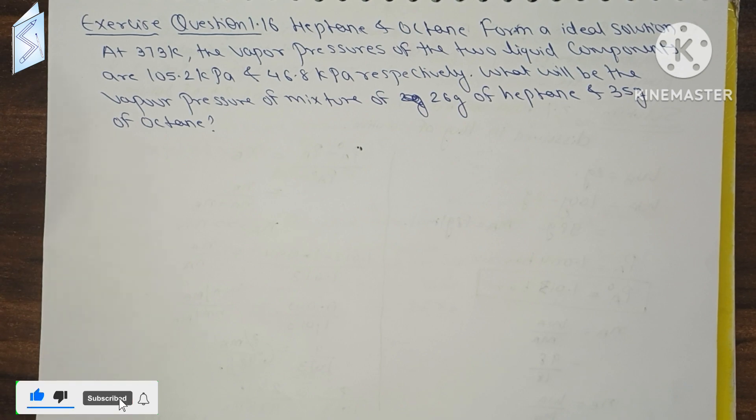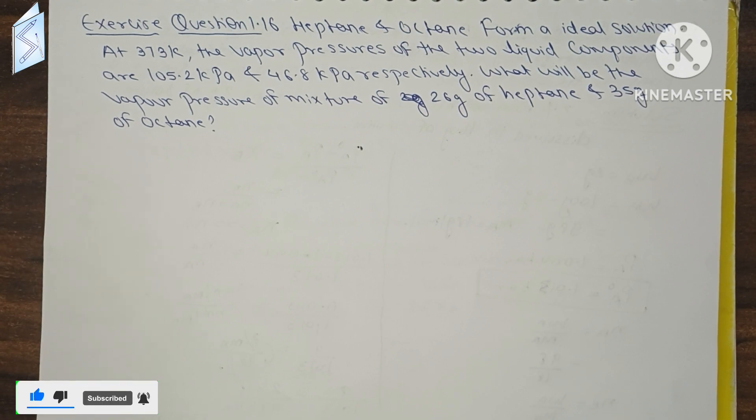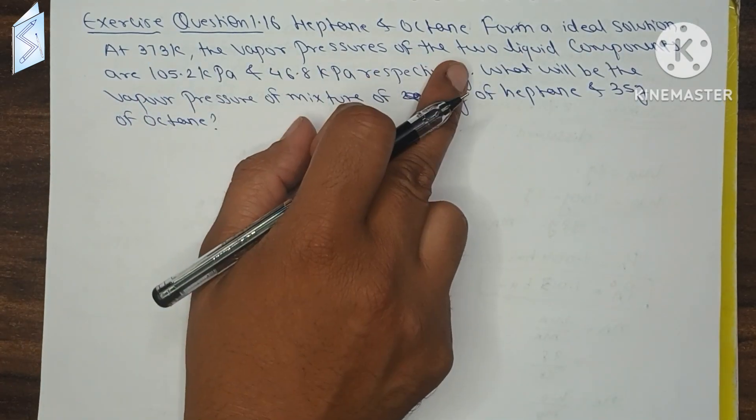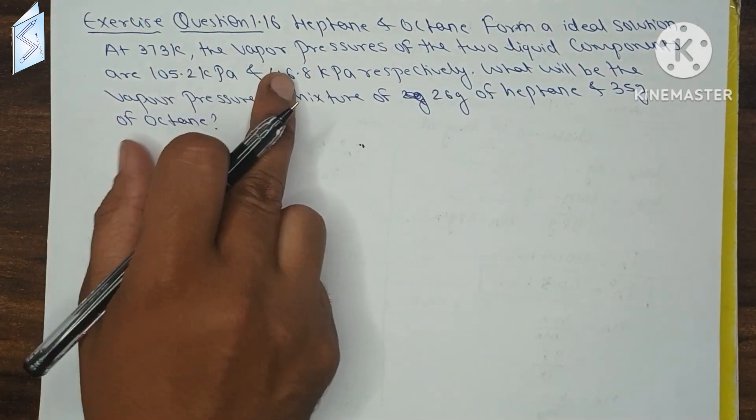Let's start question 1.16. Heptane and octane form an ideal solution, both are making an ideal solution. At 373 Kelvin, vapor pressure is given for all liquid components.